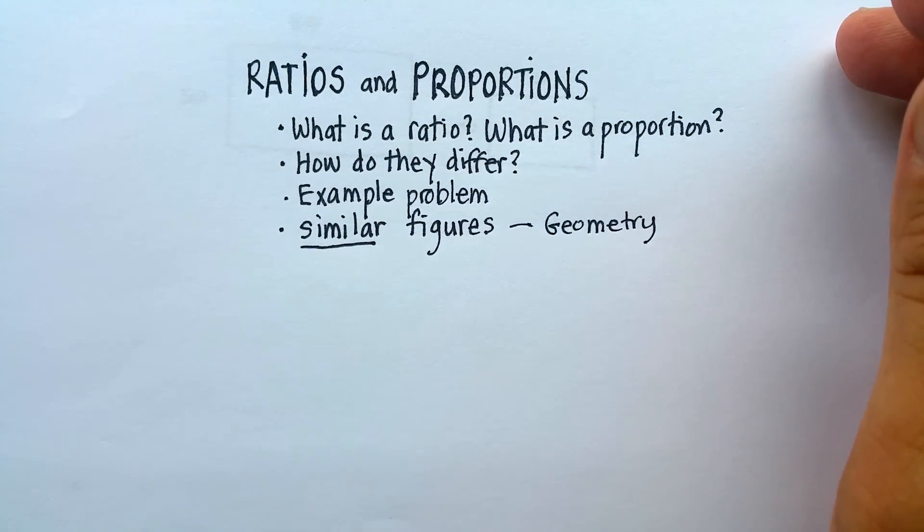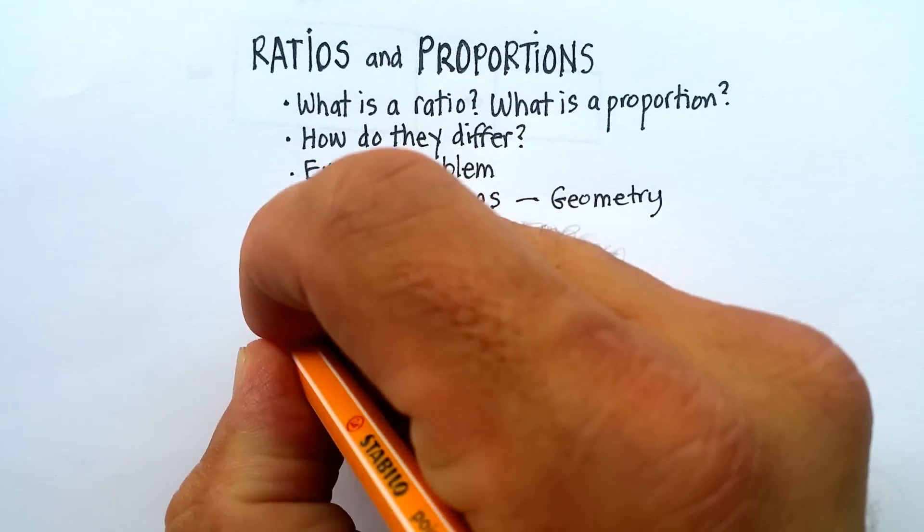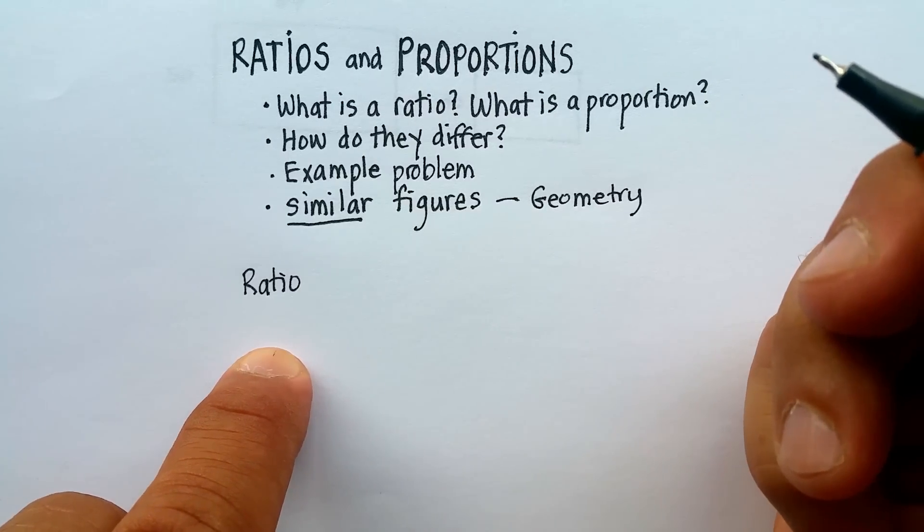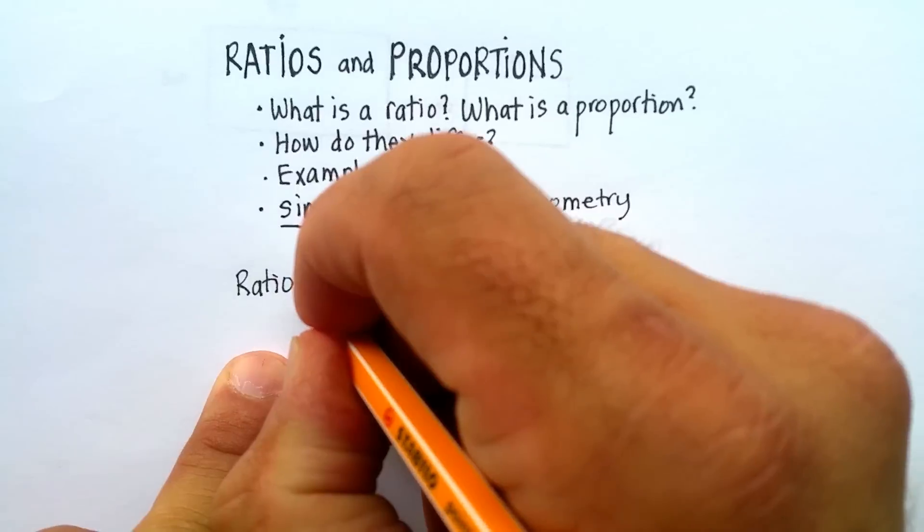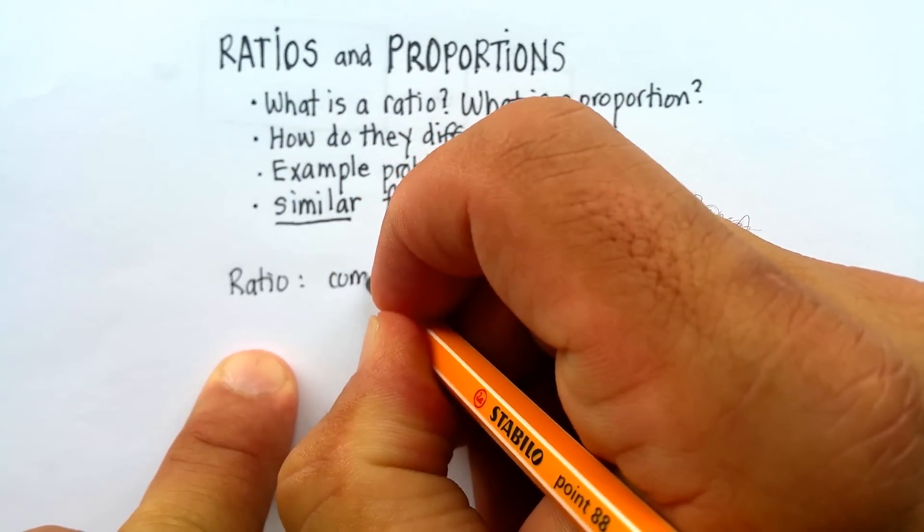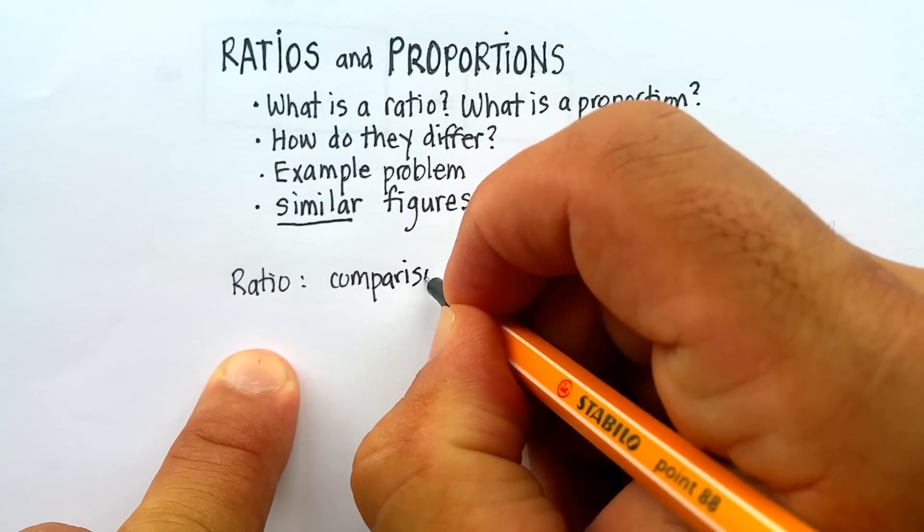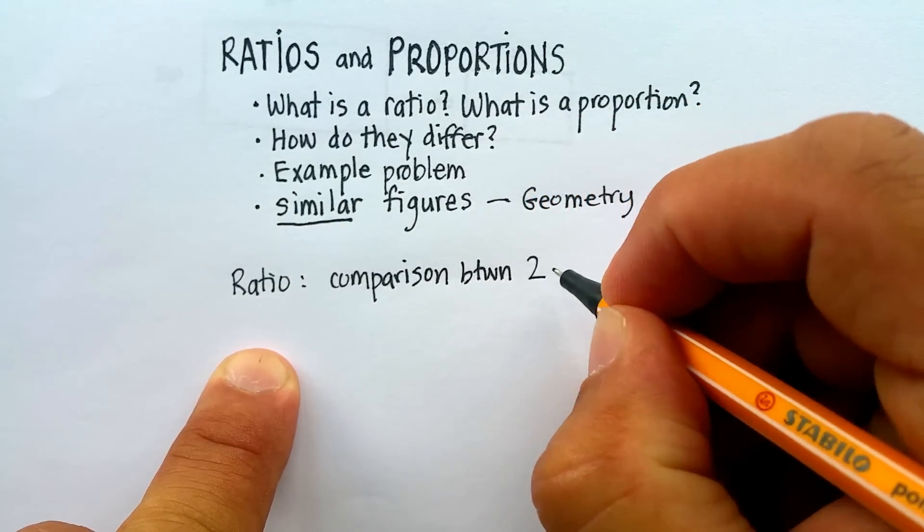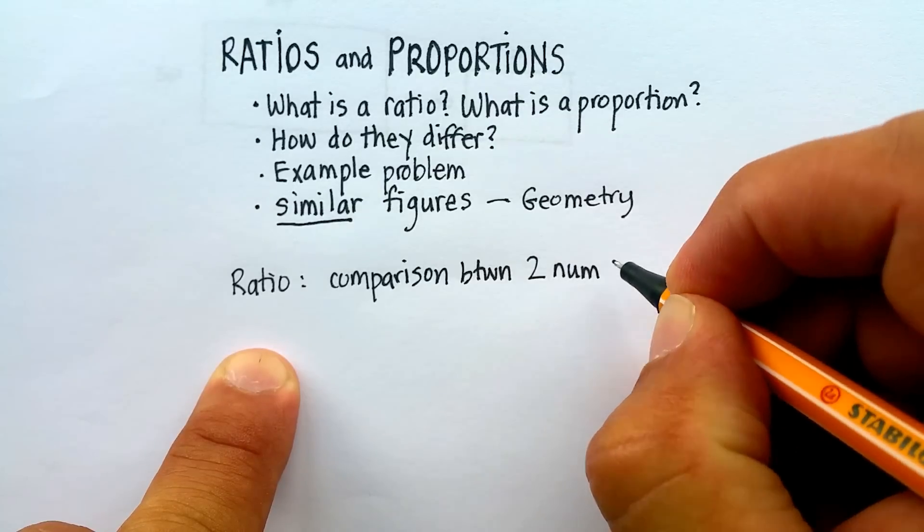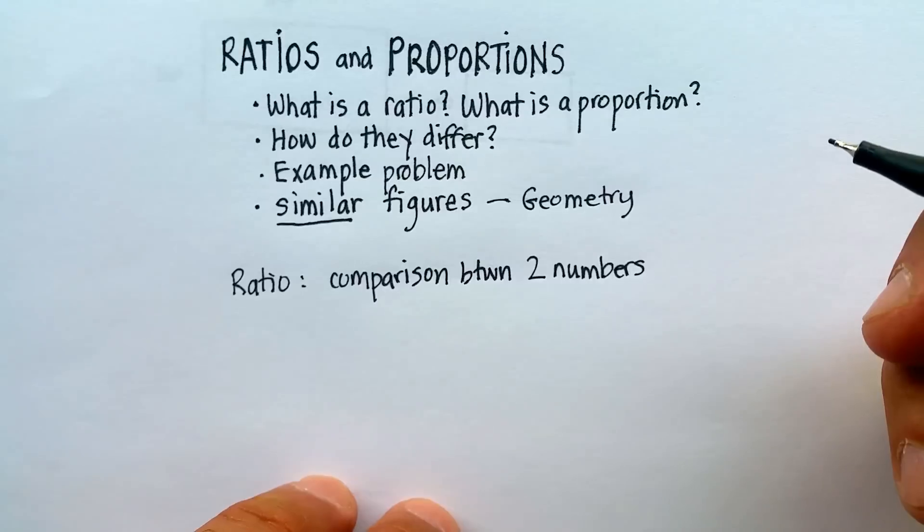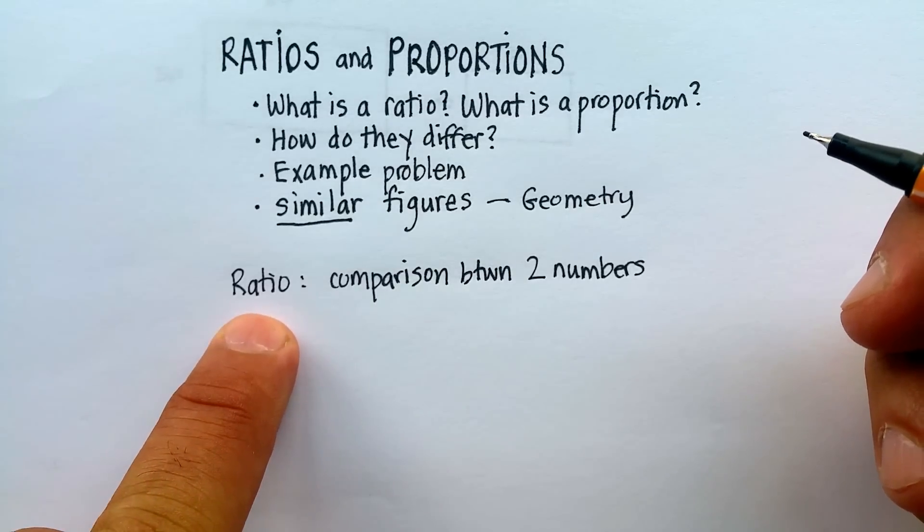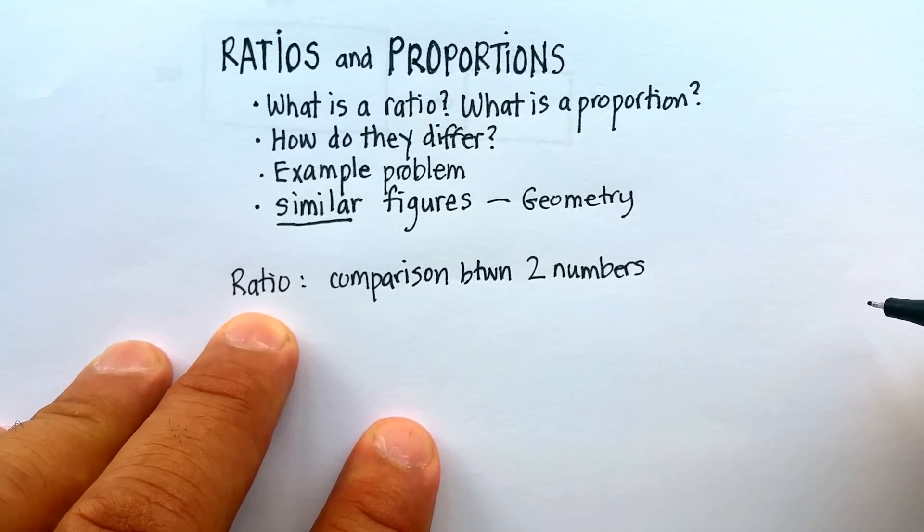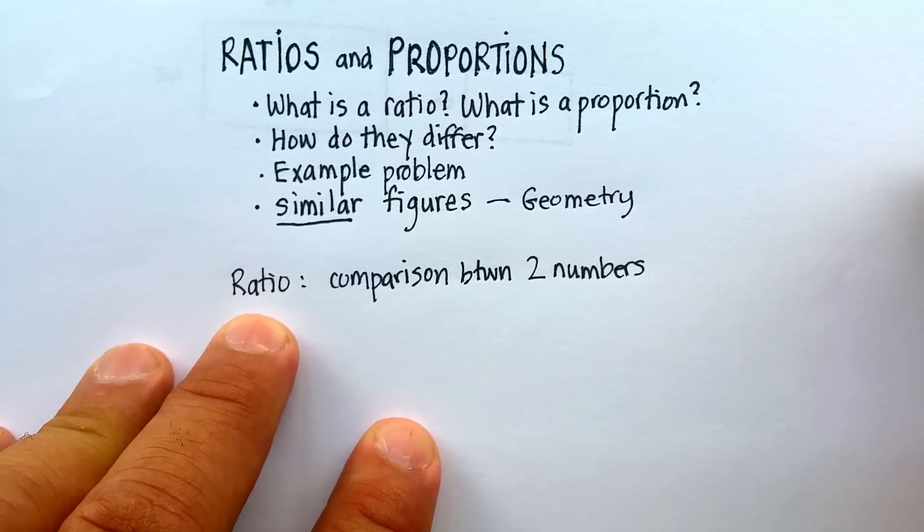So what is a ratio? A ratio basically is just a comparing of two numbers or two figures. So it's a comparison between two numbers or figures. And we know a number of ratios. For example, the xy-axis is a comparing of the x-coordinates and the y-coordinates.